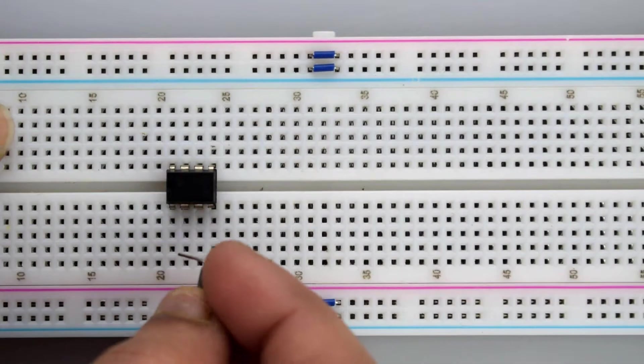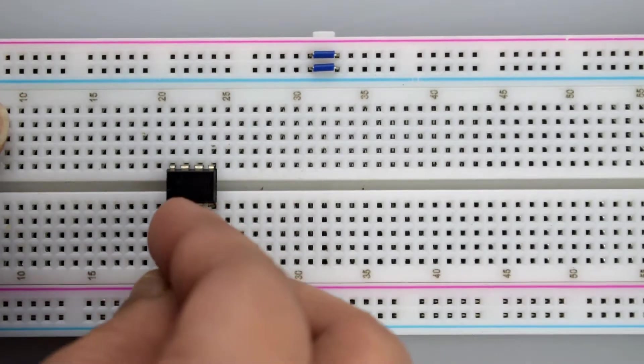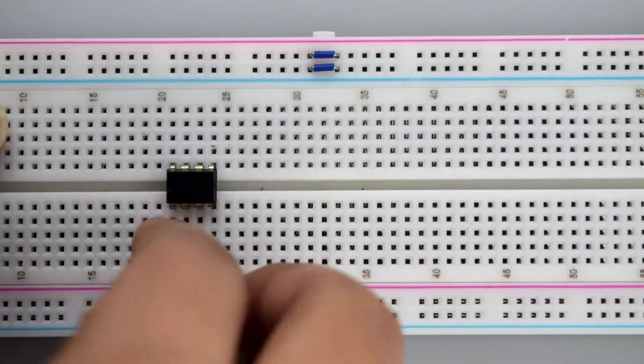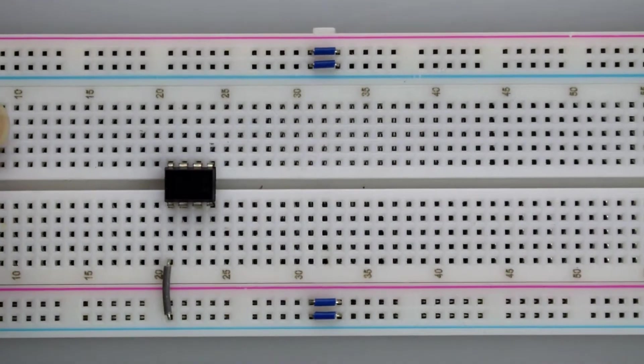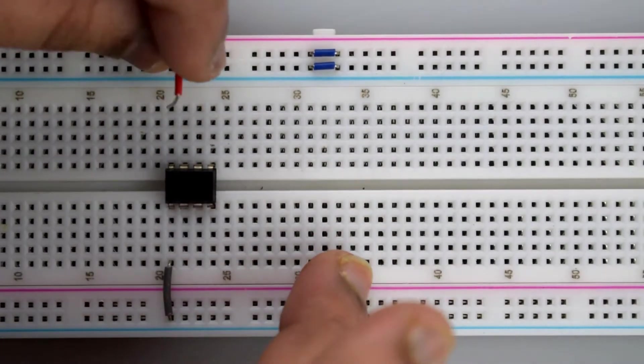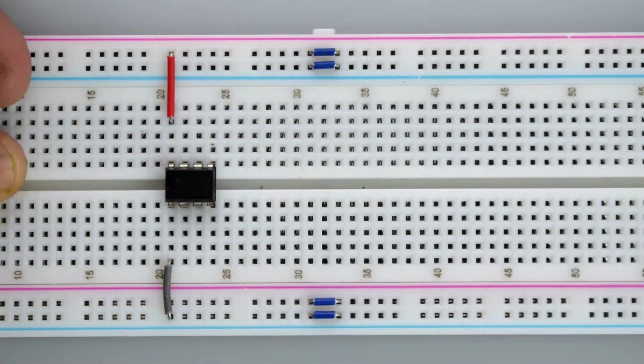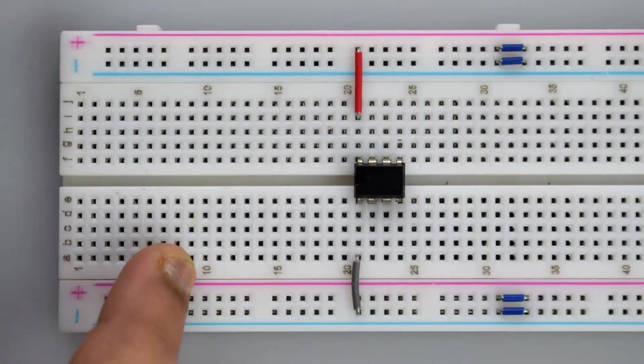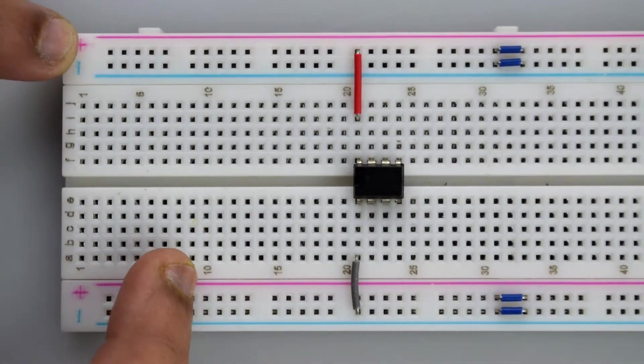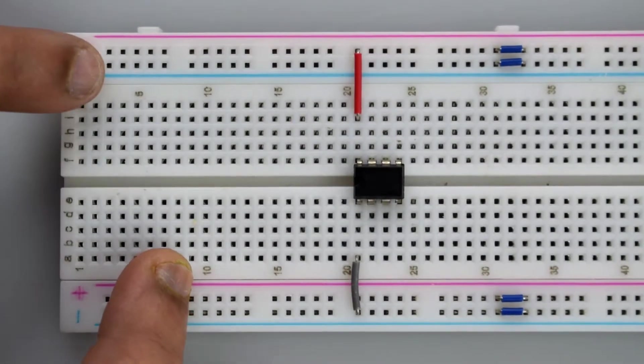Connect the first pin of the 555 timer IC to the negative rail on the breadboard. Then connect pin number 8 of the 555 timer IC to the positive rail on the breadboard. These are labeled plus and minus signs on the breadboard.